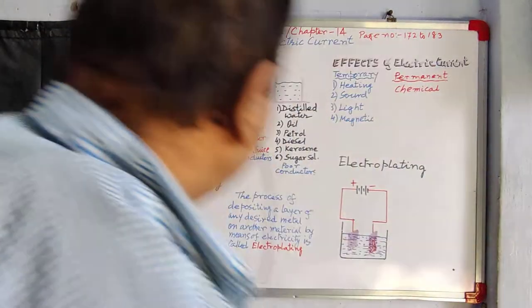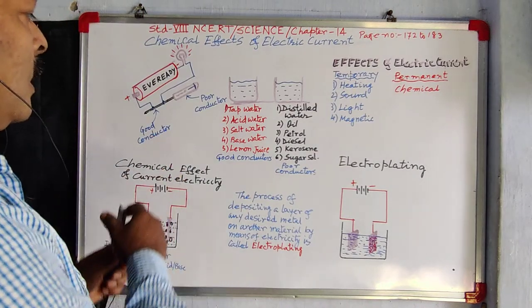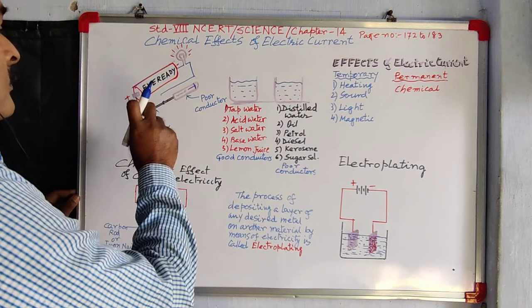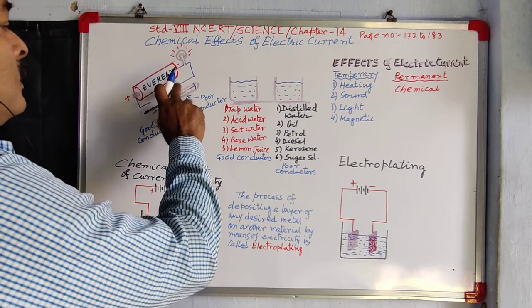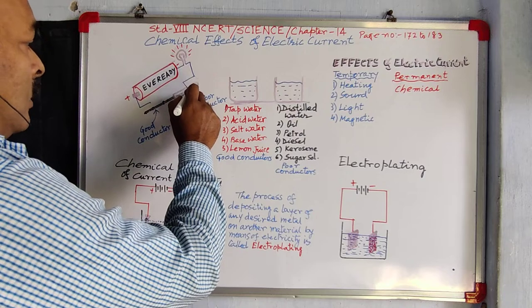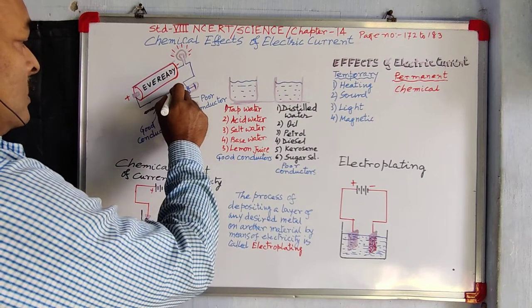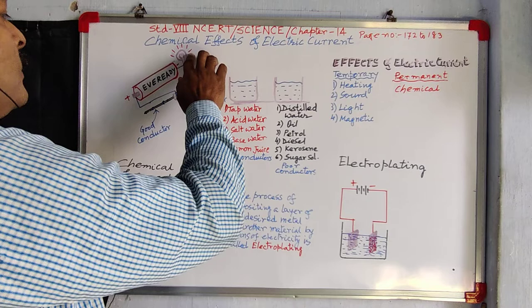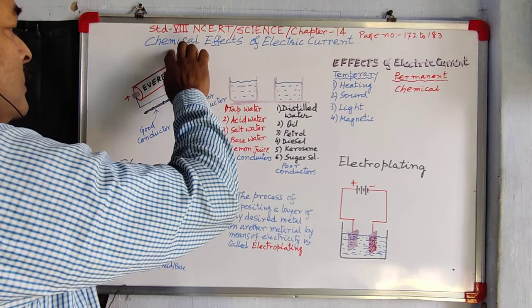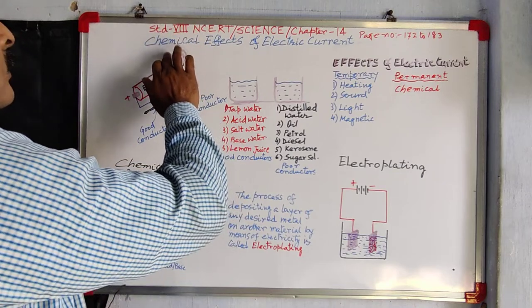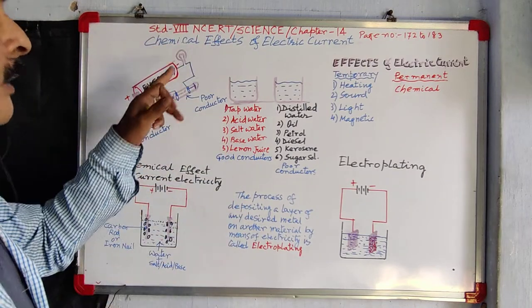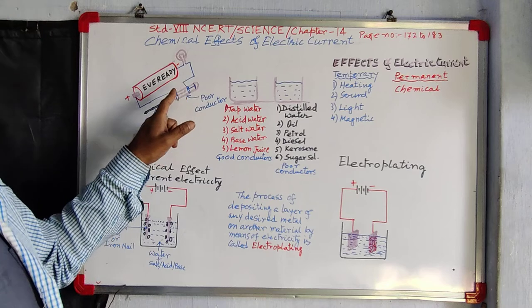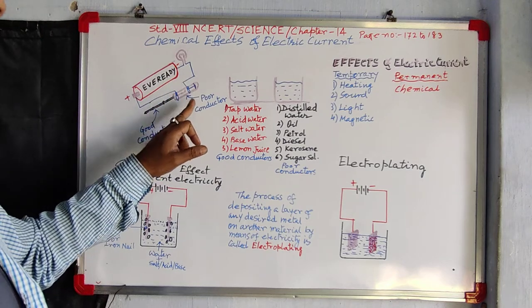If I do a little change — if I remove this connection from the metallic part and do the connection with the non-metallic part, means with the plastic part or wooden part, then I can see the bulb is off. It is not on, bulb is off. This shows that electricity is not passing through the plastic or wood, so it is a poor conductor.